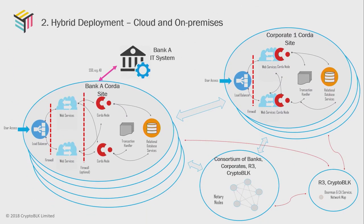The second challenge is hybrid deployment. We are not thinking about deploying the entire system onto just one generic environment. From day one, we've been thinking about deploying to different kinds of networks — heterogeneous networks. Some banks may want to run it on their own data center; others may prefer AWS. Some corporates may prefer Microsoft Azure. We need to consider all these different scenarios and how to connect them together.